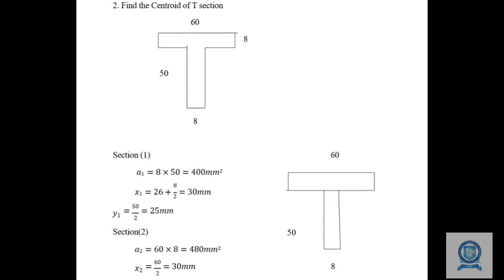Next, we solve a problem for the T section: Find the centroid of the T section as shown. This is an axis-symmetrical T section — drawing a centerline, both sides are equal. The section is divided into two rectangles: the base is 50 × 8 and the top rectangle is 60 × 8. For section 1: a1 = 50 × 8 = 400 mm². The x1 centroidal distance has a gap of 26 mm, so x1 = 26 + 8/2 = 30 mm.